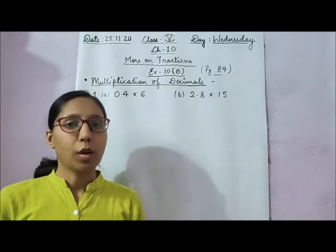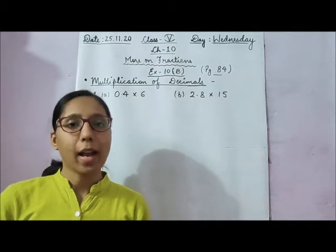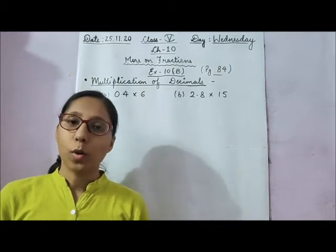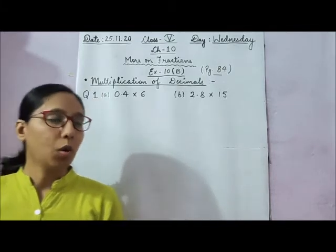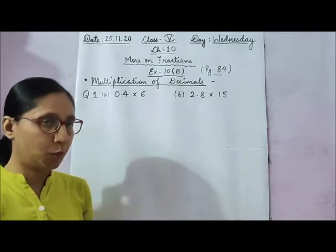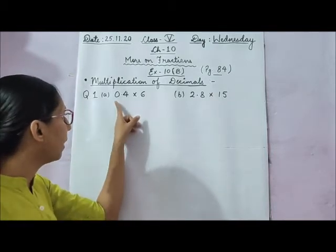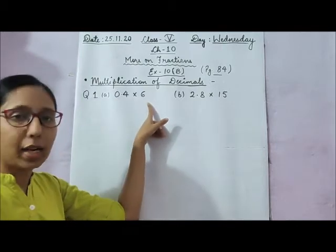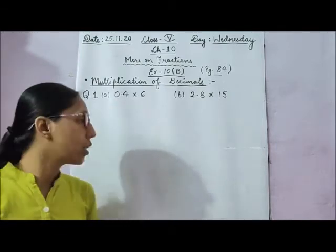Good morning students. You have already learnt about how to add and subtract decimals. Now we are going to learn how to multiply decimals. So in Exercise 10b, which is on page number 84, question number a, we have to multiply 0.4 by 6. So we are going to solve this one first of all.